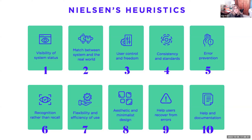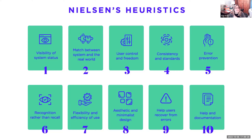Number one is the visibility of system status — essentially letting users know what's going on. Is it loading? Is it giving an indication of how much longer it's going to load? Number two is match between system and the real world. Number three is user control and freedom. Number four is consistency and standards.